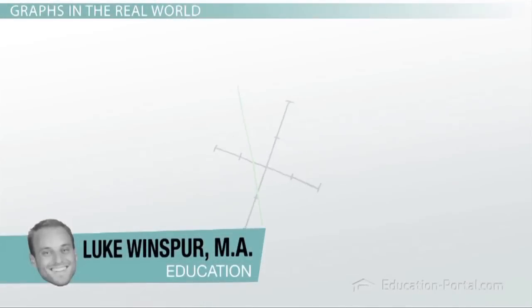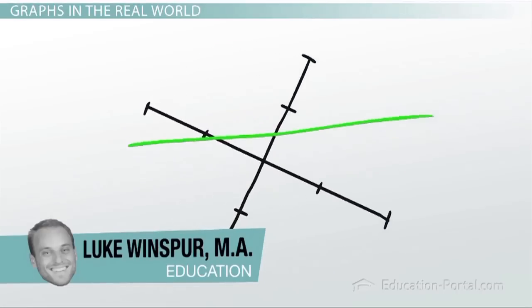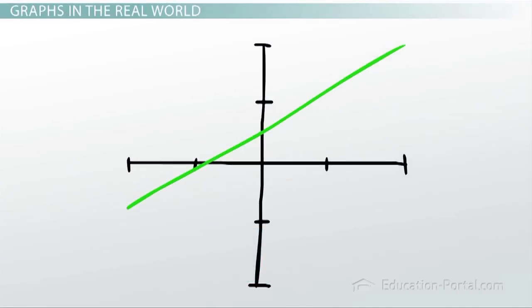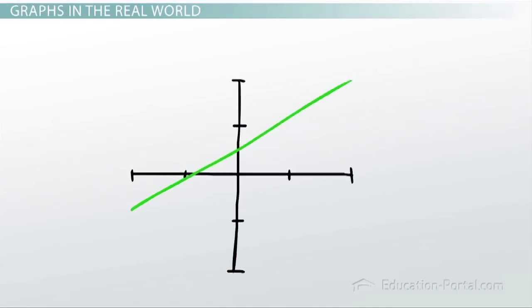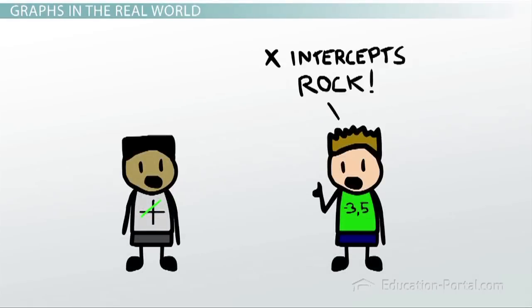This lesson is on the different parts of a graph. Knowing the vocabulary for the different parts of the graph is really useful because it allows you to do more than just draw on your paper and think about it in your head. It allows you to talk about it with other people and express what you're doing in words.